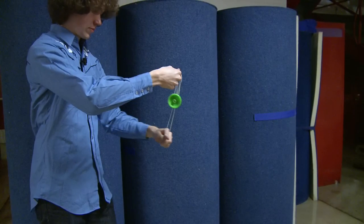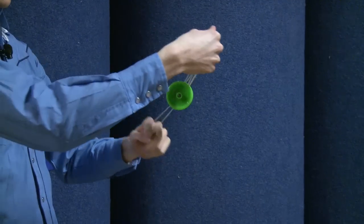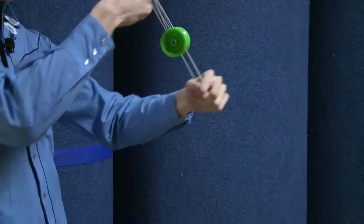From here, you treat the yoyo like a Mach 5, and move your hands around it to create a floating illusion.